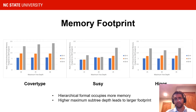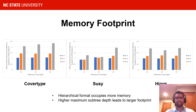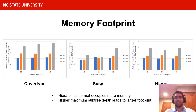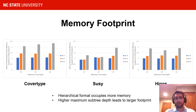We first observe the memory footprint of the hierarchical format compared to CSR. These plots show the ratio of the hierarchical memory footprint to CSR's footprint. For each cluster of bars, maximum subtree depth is varied from four to six to eight. Across all three datasets, the hierarchical format does indeed occupy more memory, and higher maximum subtree depth increases memory footprint. There are some exceptions for lower maximum tree and subtree depths where the hierarchical format occupies less space than CSR. Additionally, we'll see that this footprint is greatly outweighed by speedup.